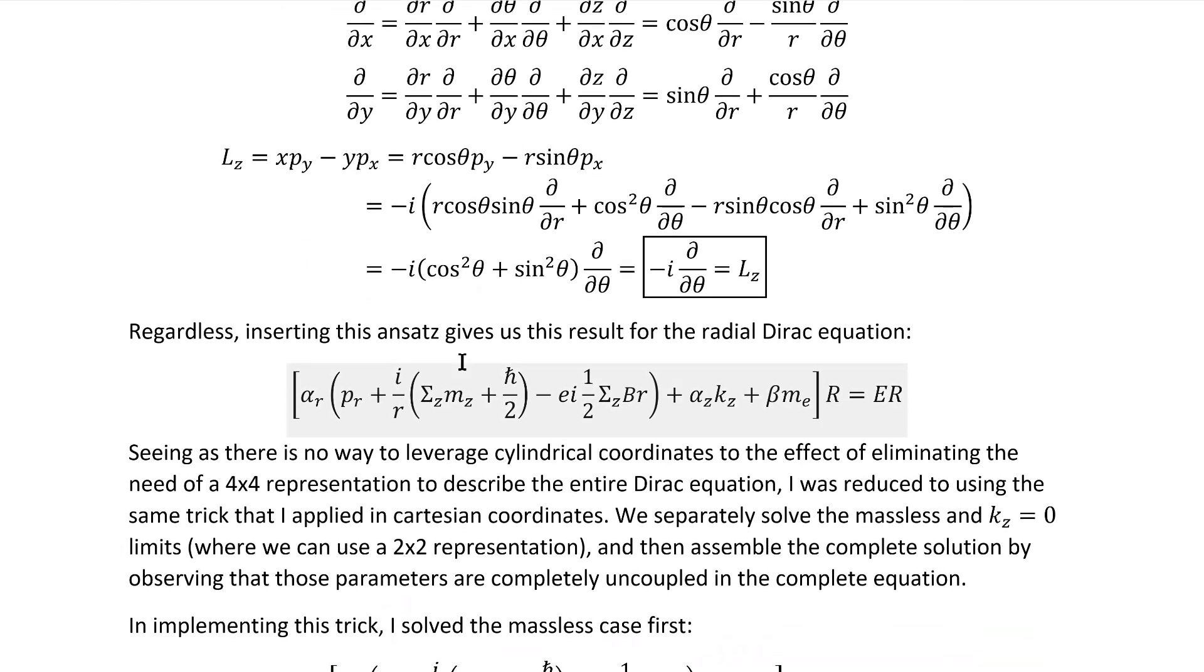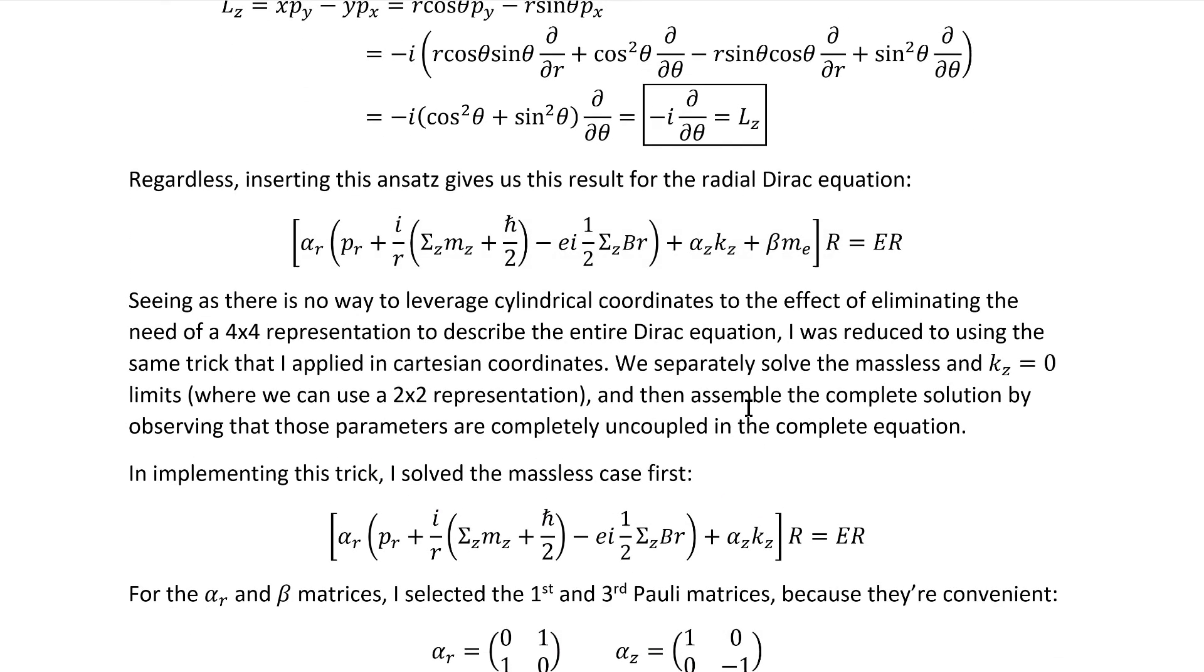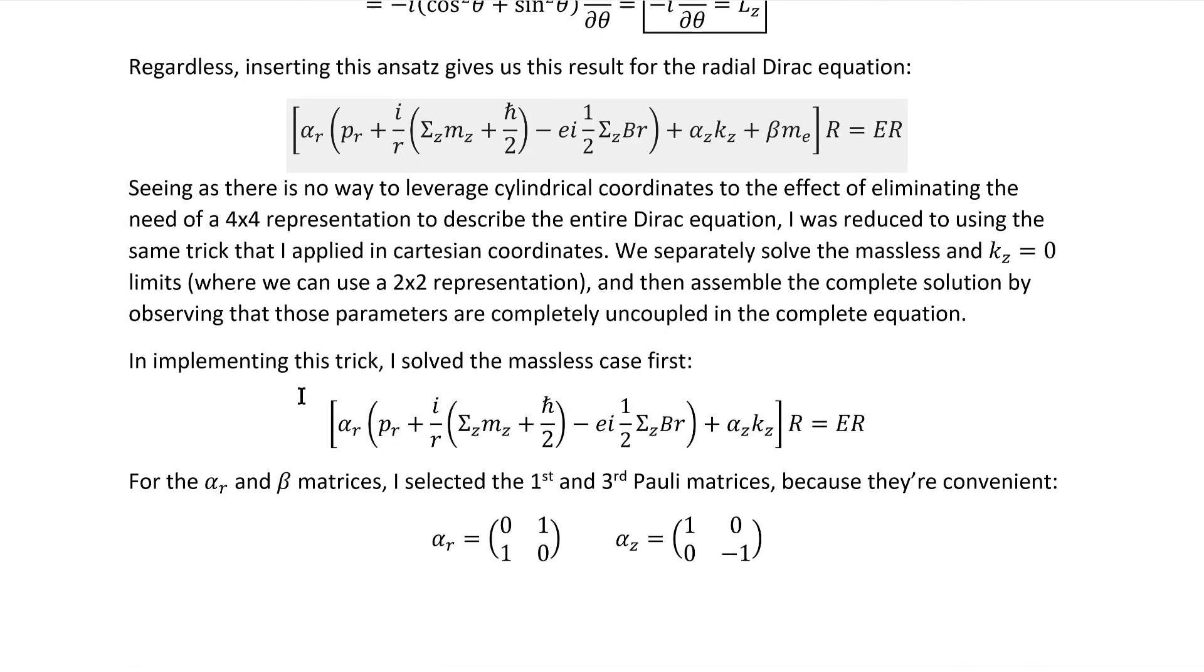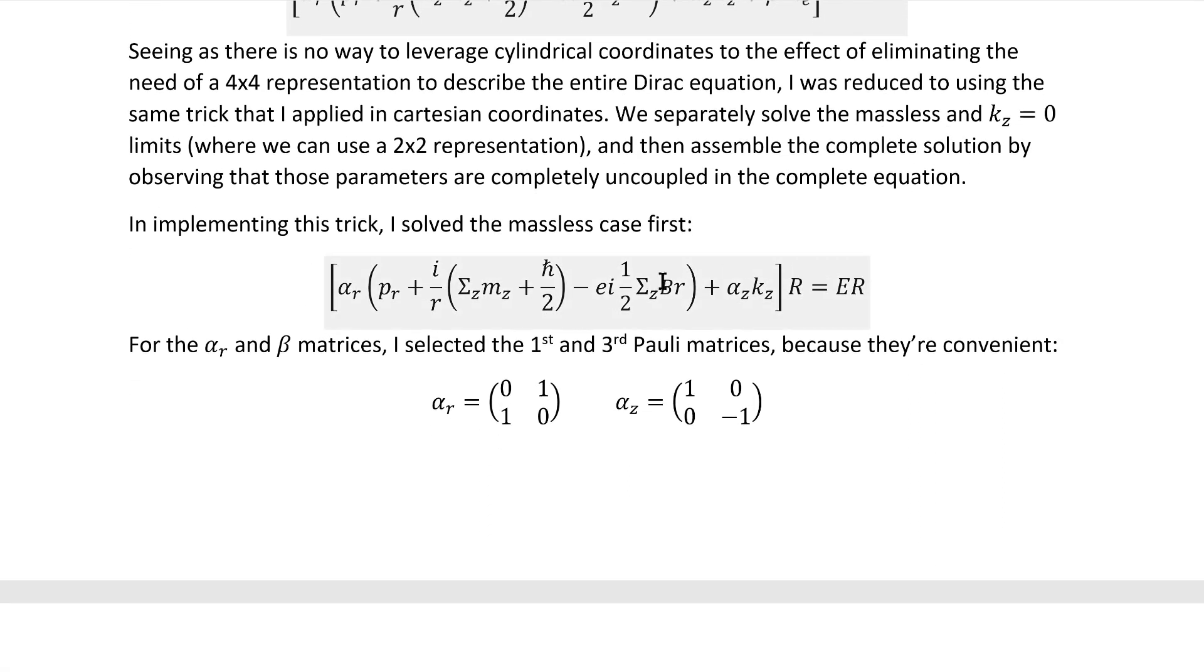Regardless, inserting this ansatz gives us this result for the Dirac equation, and seeing that there is no way to leverage cylindrical coordinates to the effect of eliminating the need for a 4x4 representation to describe the entire Dirac equation, I was reduced to using the same trick that I applied in Cartesian coordinates. We separately solve the massless and Kz equals zero limits, where we can use a 2x2 representation, and then assemble the complete solution by observing that those parameters are completely uncoupled in the original equation. In implementing this trick, I solved the massless case first, so we have this equation.